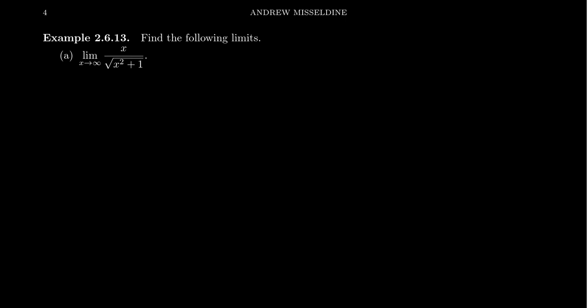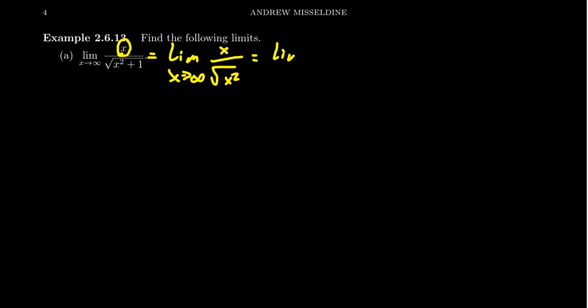Consider the limit as x approaches infinity of x over the square root of x squared plus one. It's very tempting to use the dominant term approach we used previously with rational functions. The dominant term on top is just x, and in the denominator the dominant term is the square root of x squared. So we can think of this as the limit of x over the square root of x squared, which simplifies to the limit of x over x, giving us the limit of one as x approaches infinity. This agrees with what we might have anticipated: the limit of this function as x approaches infinity equals one.